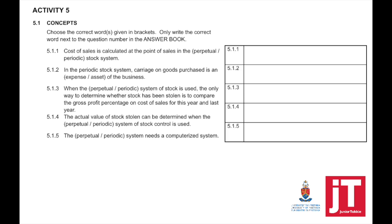Starting with 5.1.1: the cost of sales is calculated at the point of sales in the perpetual stock system. 5.1.2: in the periodic stock system, carriage on goods purchased is an expense of the business.